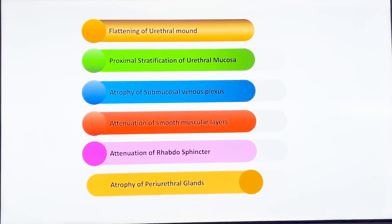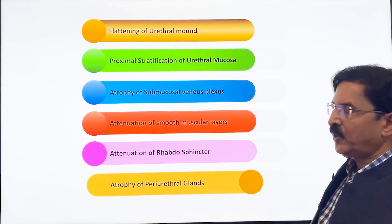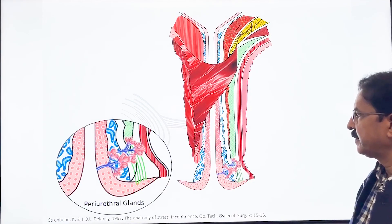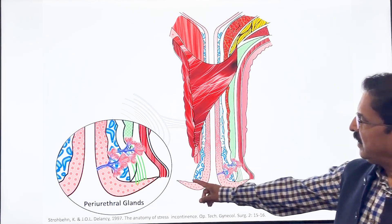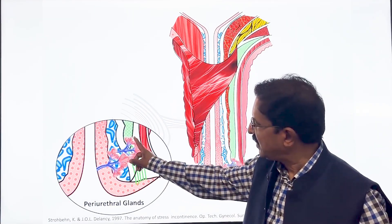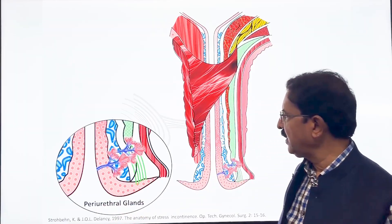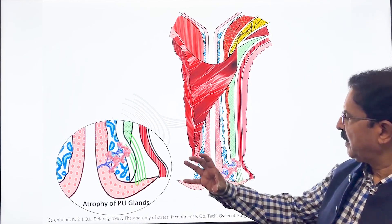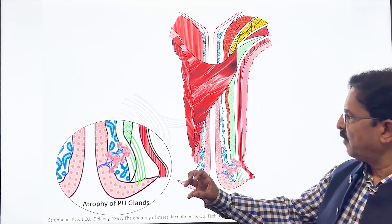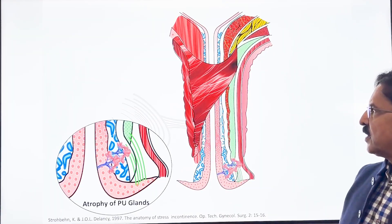The sixth change is that the periurethral glands become atrophic. You may recall seeing these periurethral glands in a magnified picture. After menopause, these glands become smaller and smaller and produce less and less mucus.